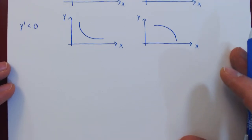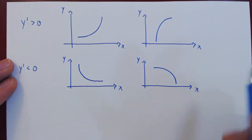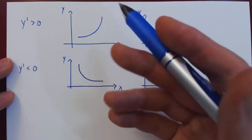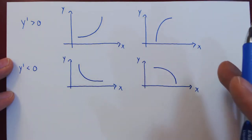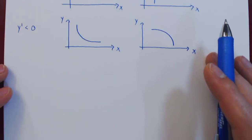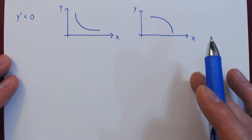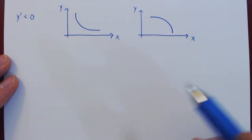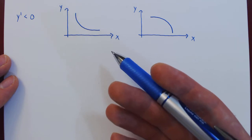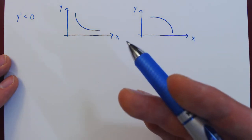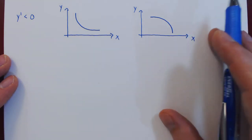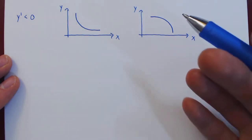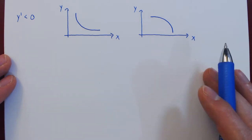The last possibility: if the derivative is not positive and not negative, and assuming that the derivative exists, then the derivative must be zero. The derivative is rarely zero over an entire interval, because that would imply that the slope is everywhere zero, therefore the function is constant everywhere, so the graph is simply a horizontal line — that's not very interesting. The derivative is more likely to be zero at a specific point or points.